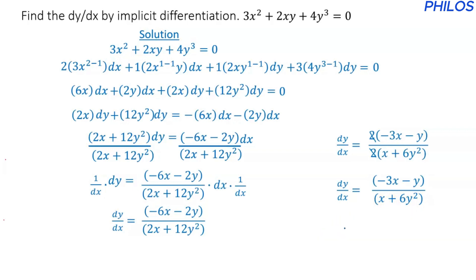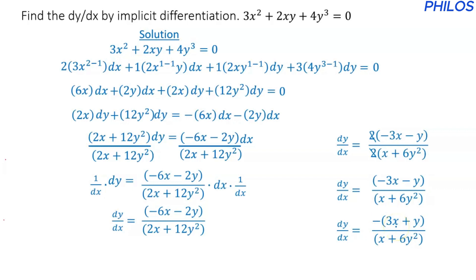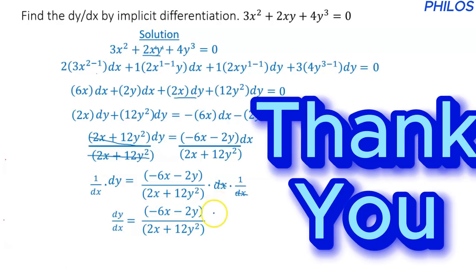So this is the answer. You can also leave your answer by factoring out negative 1, writing it as negative times the quantity 3x plus y, all divided by x plus 6y squared — but you need to include the bracket after the negative, otherwise it looks like the negative is only affecting the 3x. That is the final answer. In the next video, we take another question. Thank you.